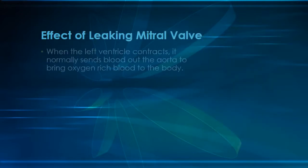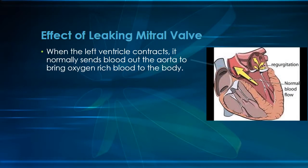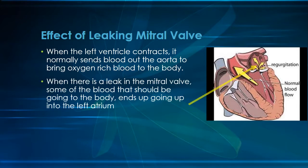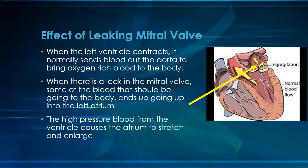The left ventricle is a powerful muscle. It must generate enough force to send blood throughout the body. When it contracts, most of the blood goes out the aorta to the body. But if there is a leak in the mitral valve, blood will flow into the left atrium under high pressure. This high-pressured blood causes the thin-walled atrium to stretch and enlarge.